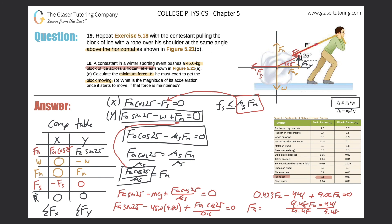Dividing both sides by 9.48, we get F sub a = 441 / 9.48 = 46.5 Newtons. In the previous problem (5.18) the answer was 51 N. He needs less force here because he's pulling upward, which reduces the normal force between the block and the surface, and therefore reduces friction opposing the motion.